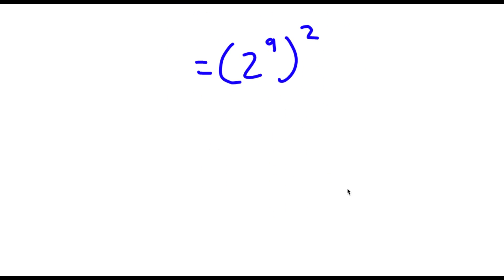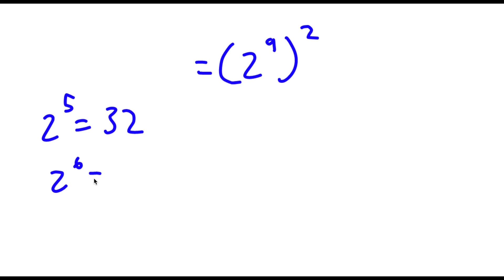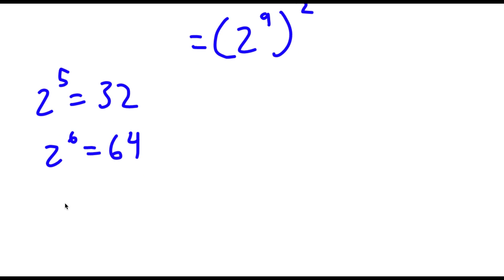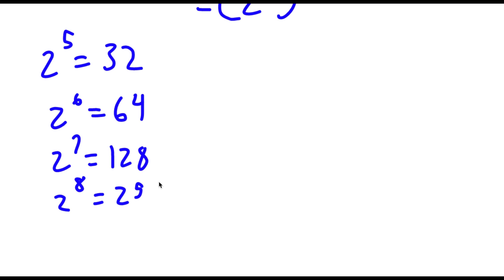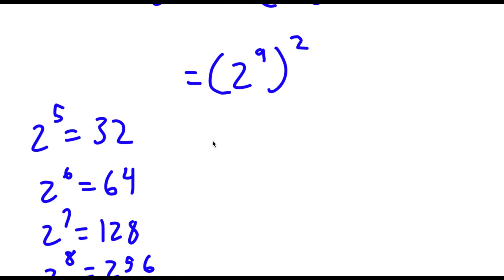Now 2 to the power of 9 — what is that? Well, 2 to the power of 5 is equal to 32. So 2 to the power of 6 is double of 32, which is 64. 2 to the power of 7 is double of 64, which is 128. 2 to the power of 8 is double of 128, which is 256. And finally, 2 to the power of 9 is going to be double of 256, which is 512. So now I have 512 squared.